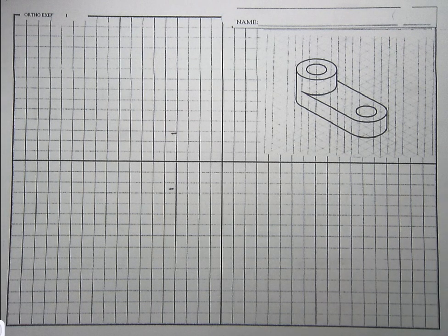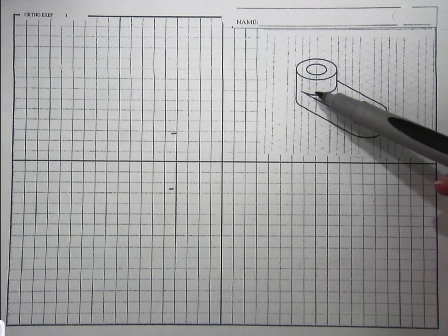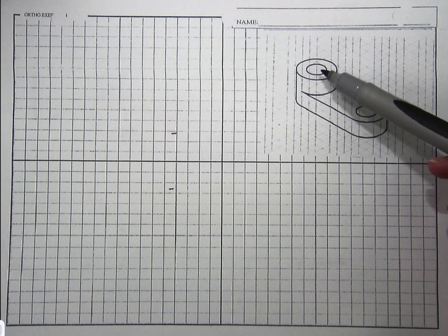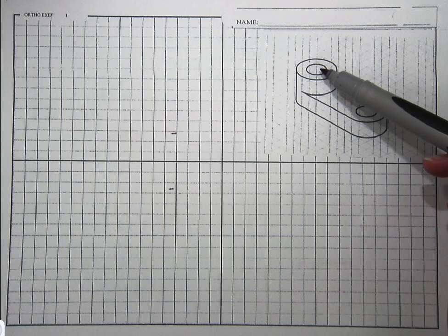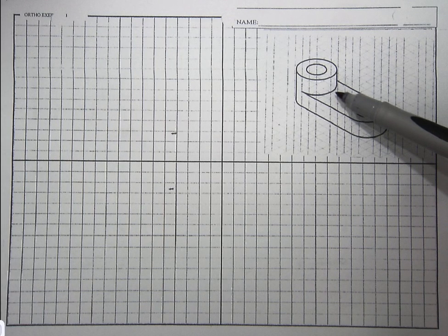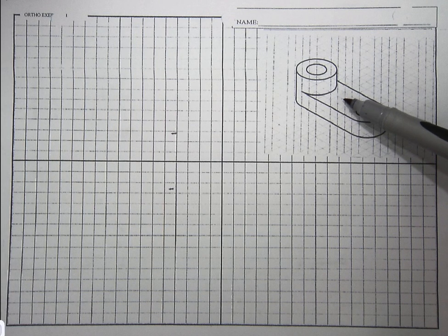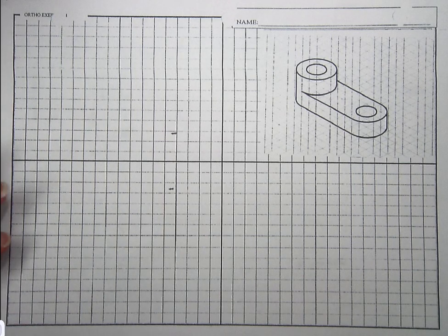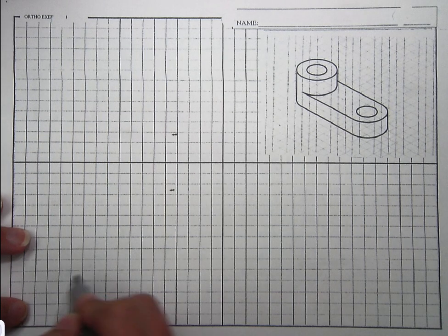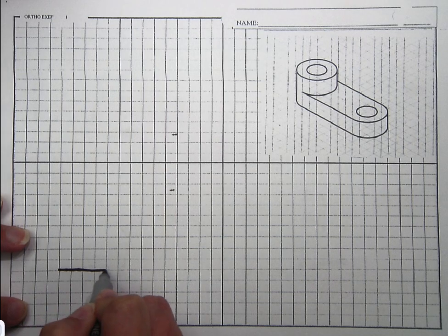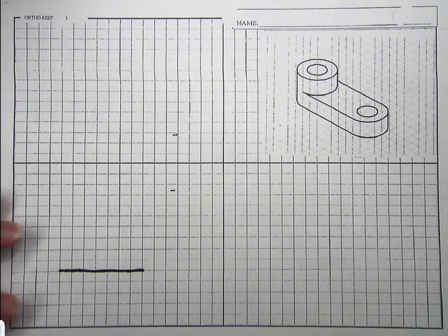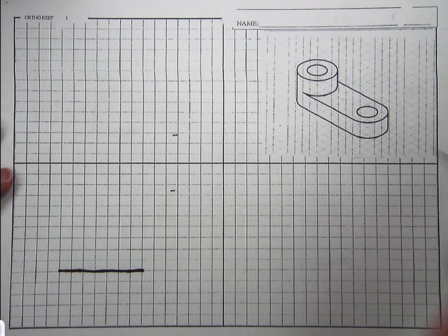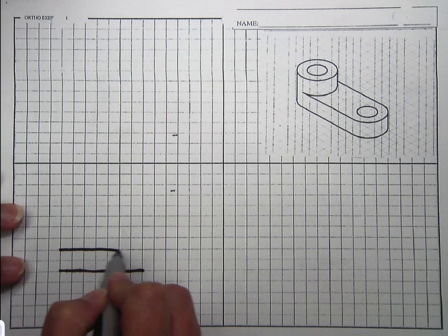Alright, so let's go ahead and count. So I'm going to go from center point to center point is how I'm going to count. So I know it goes 1, 2, 3, 4, 5, 6, 7. So I know that I'm going to draw this part 7 wide. And it is 1, 2 tall. So let me go ahead and just start with that part.